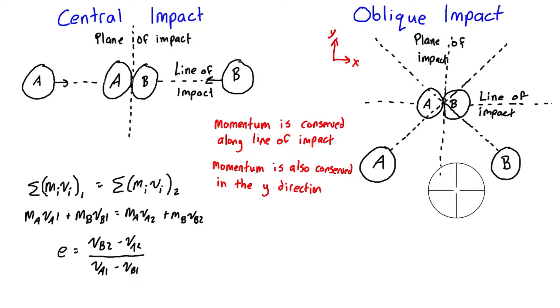So for the four unknowns we have four equations. The first equation that we're going to use would be the conservation of momentum equation in the x direction. So along the line of impact we have the sum of m_i v_ix before the impact is equal to the sum of m_i v_ix after the impact.